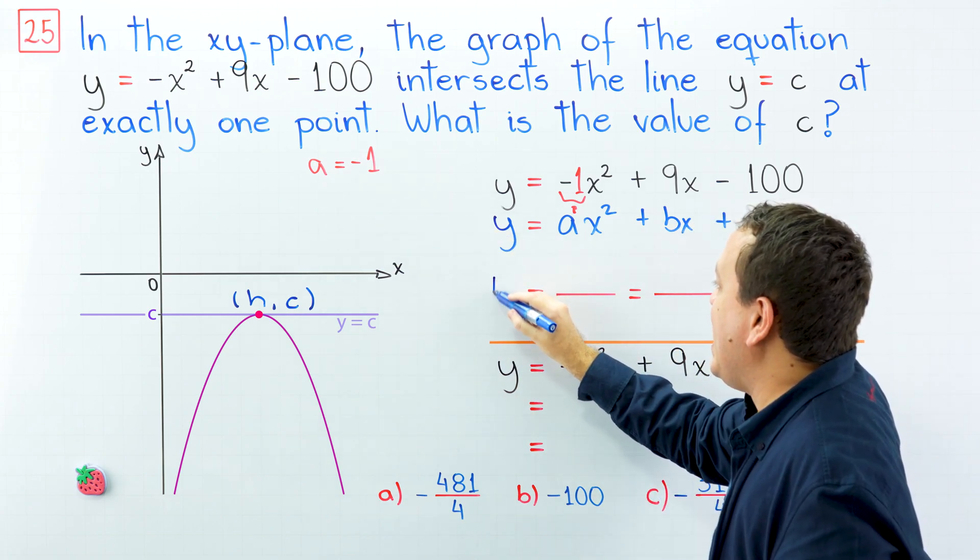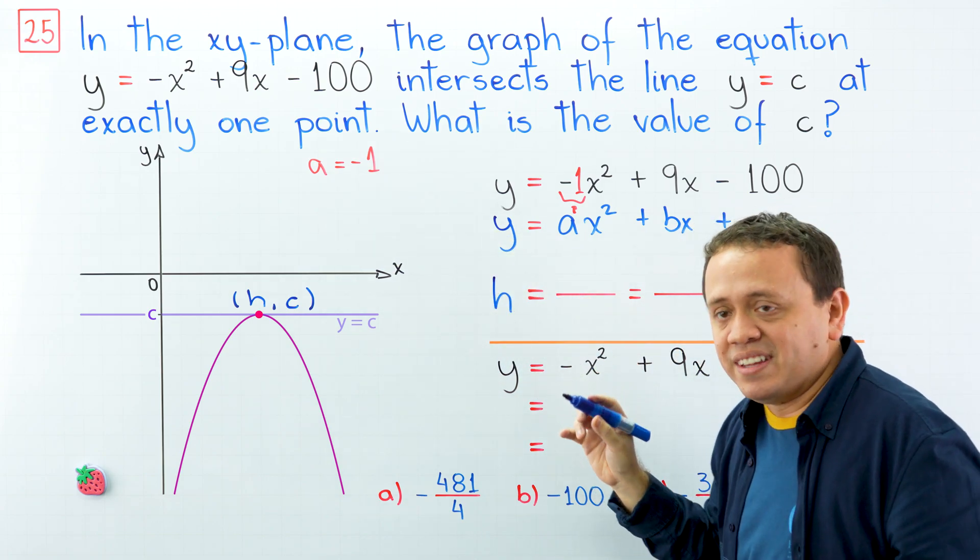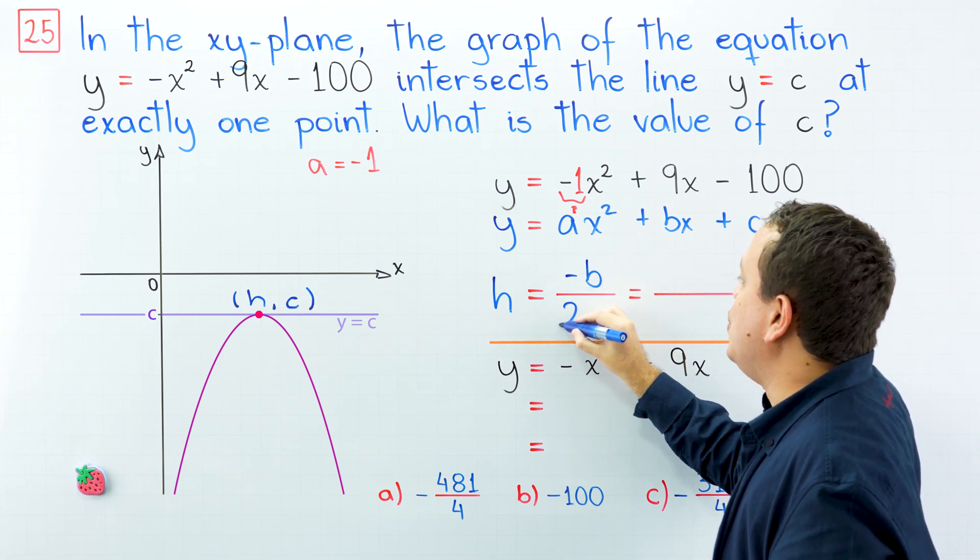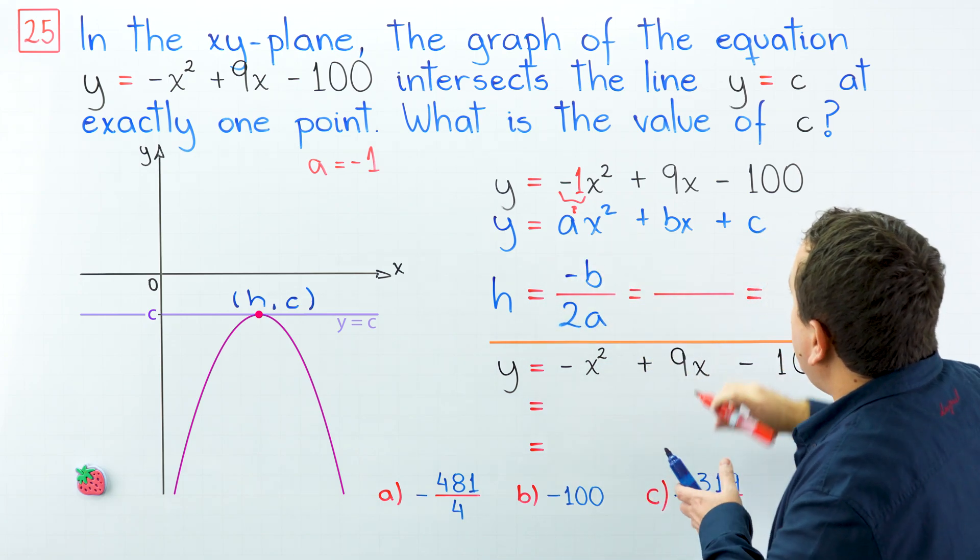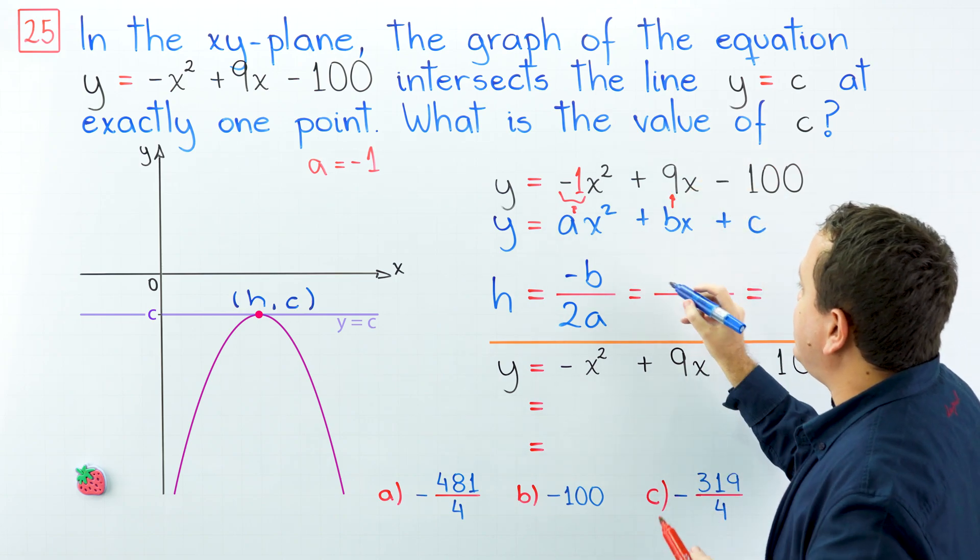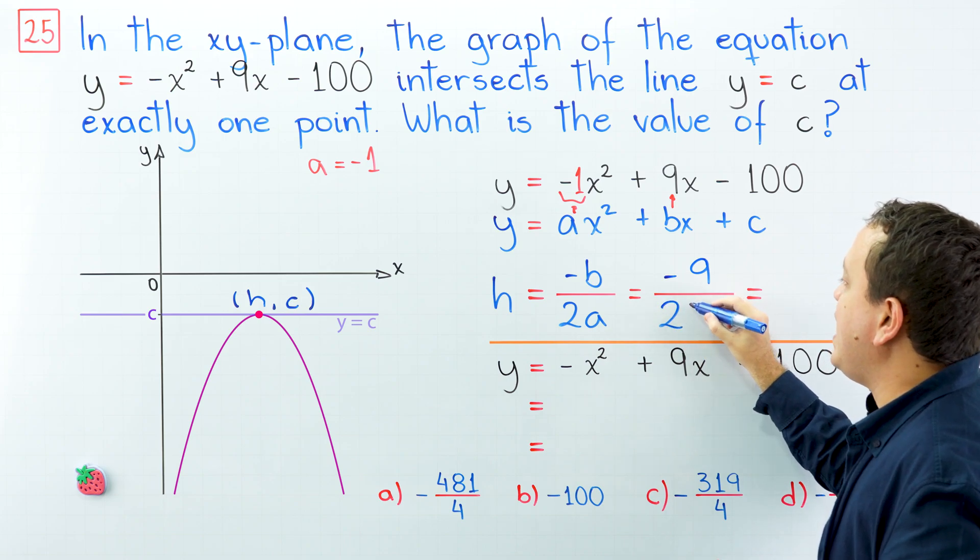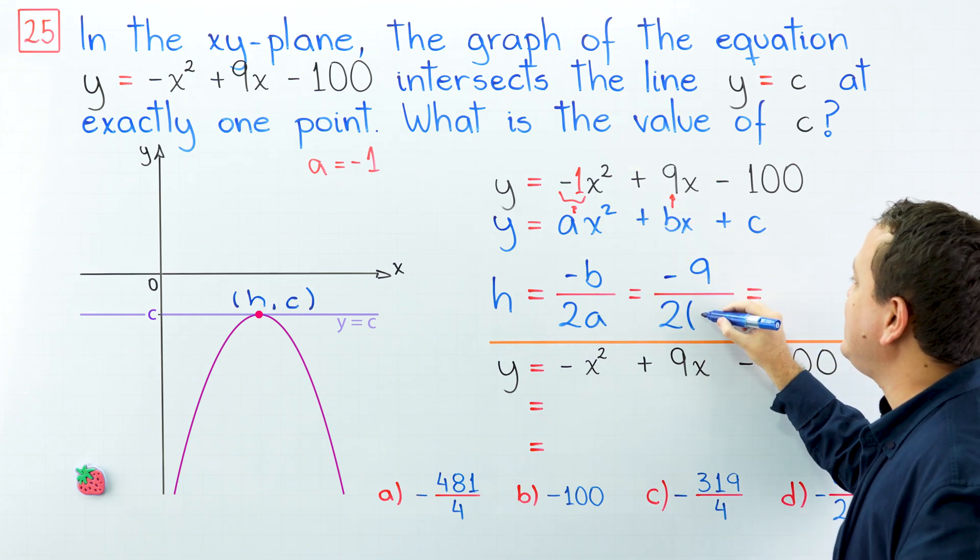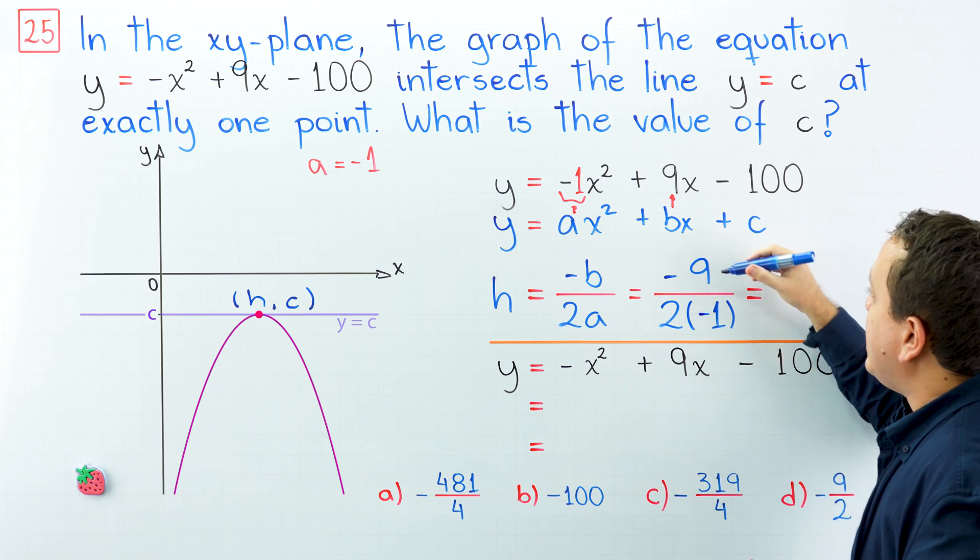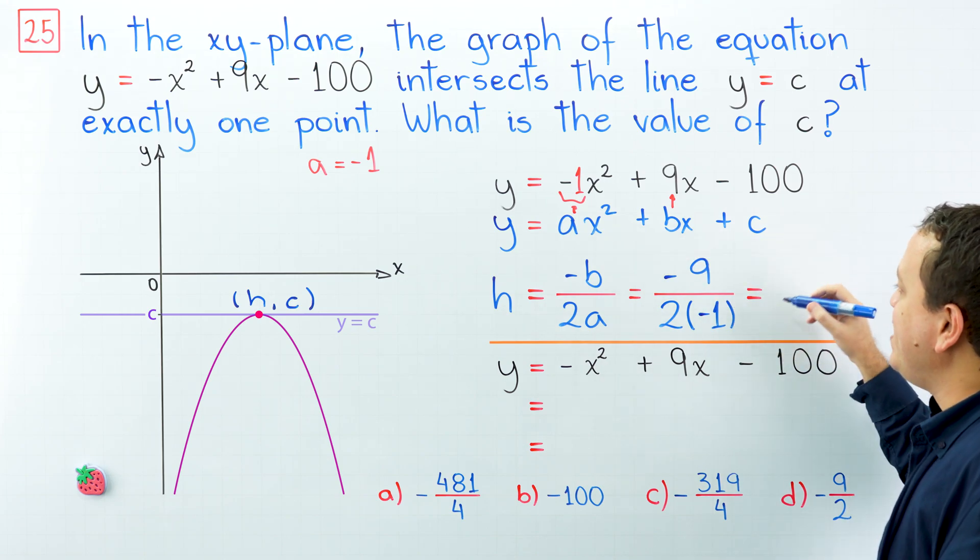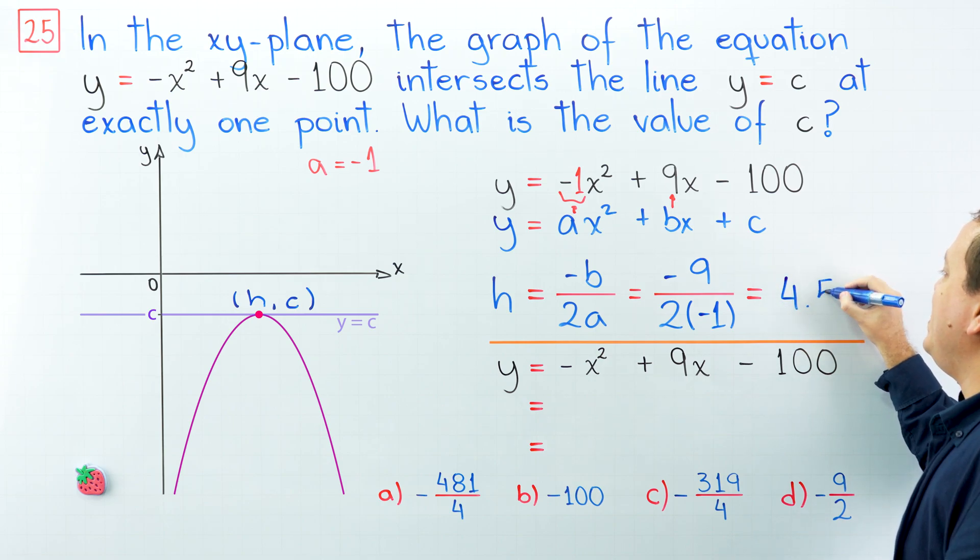Let's start with h, the x coordinate of the vertex. h is equal to -b over 2a. The value of b is here. b is equal to 9. So we have -9 divided by 2 times a, and the value of a is -1. Negative divided by negative gives us positive. And 9 divided by 2 gives us 4.5.